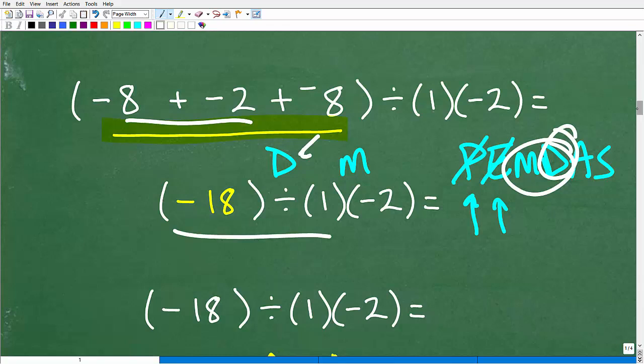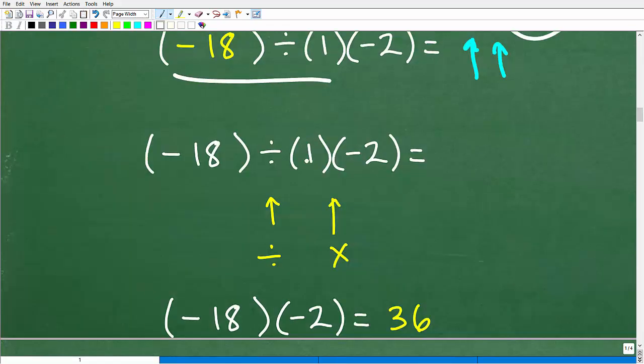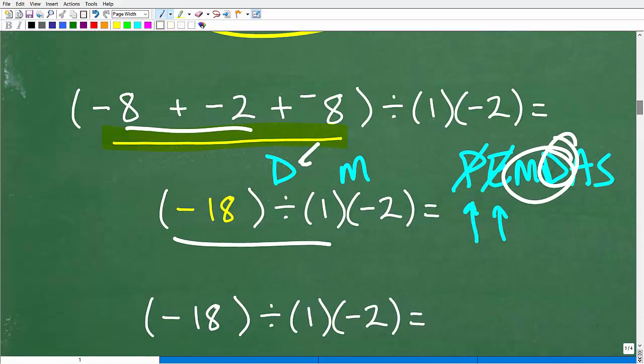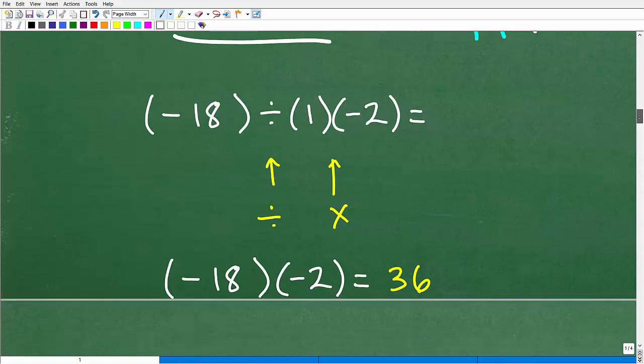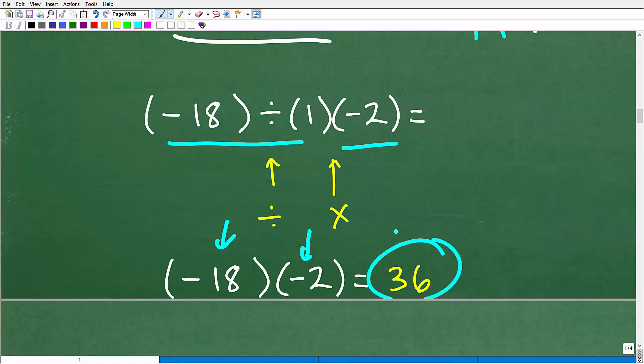But a lot of students make errors when it comes to the order of operations. Namely, because this step right here between multiplication and division, they think that, oh, you always have to do multiplication first and then division. That's not the way it works. It's whatever you see first from left to right. Okay, so we're almost done. Negative 18 divided by a positive one. Pretty straightforward stuff. That's negative 18. And now we're going to take that negative 18 and multiply by negative two. A negative times a negative is a positive. So negative 18 times a negative two is a positive 36.